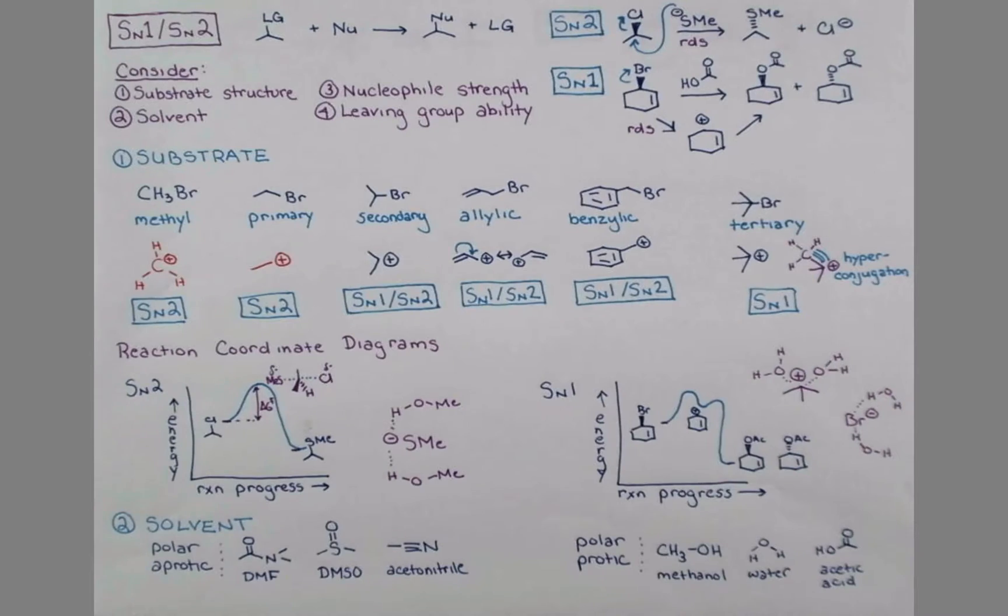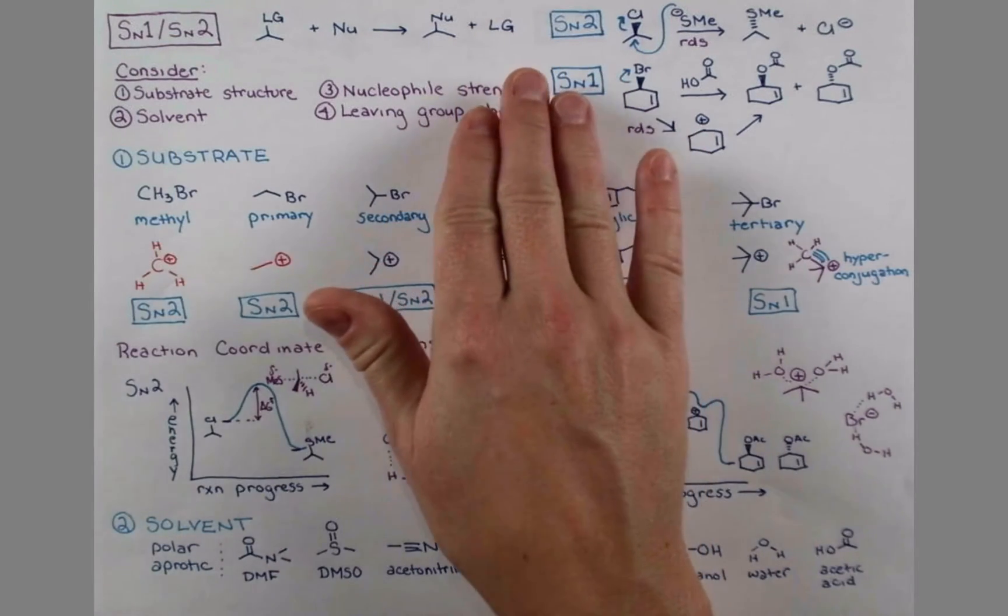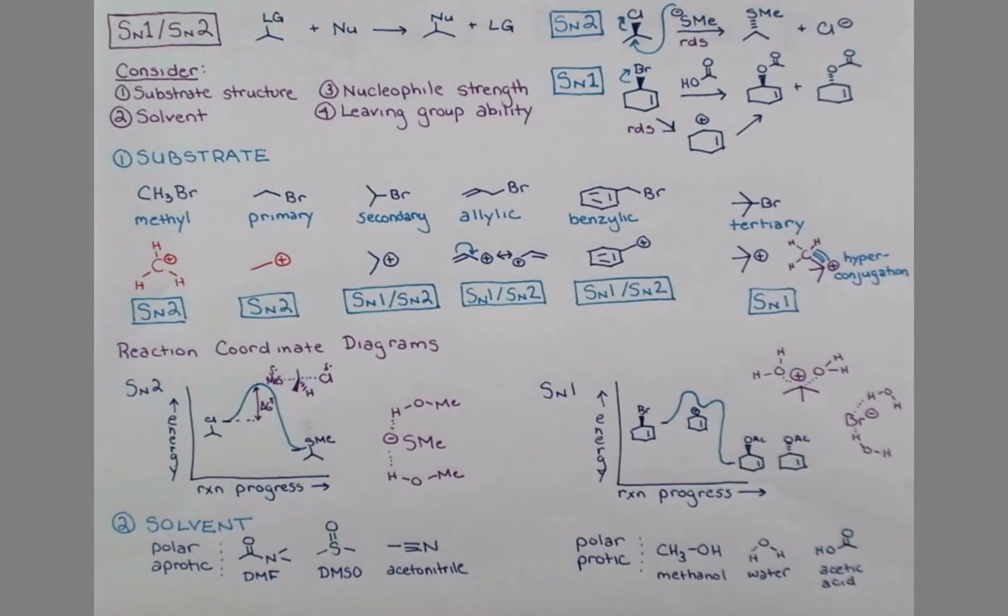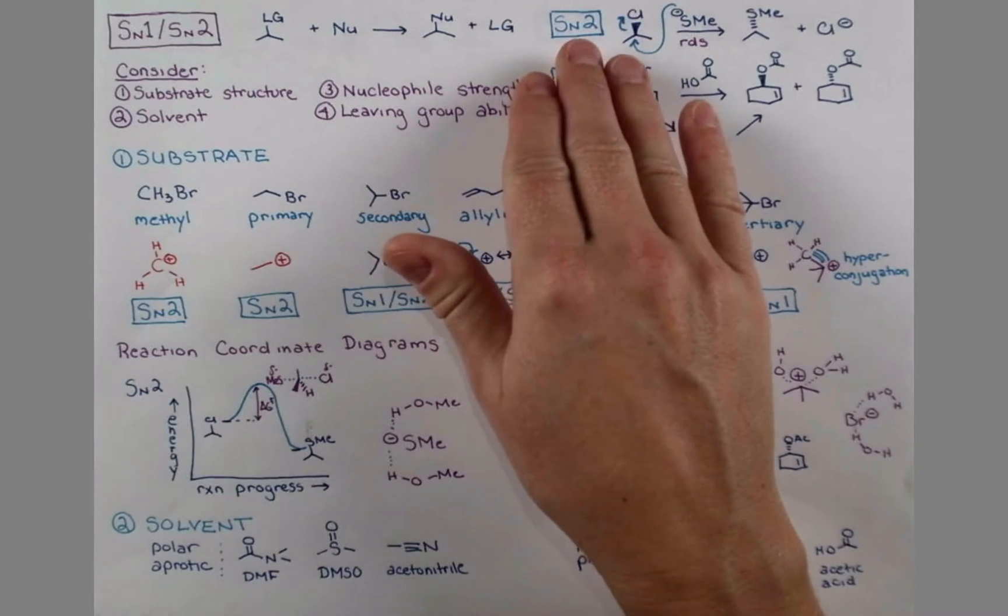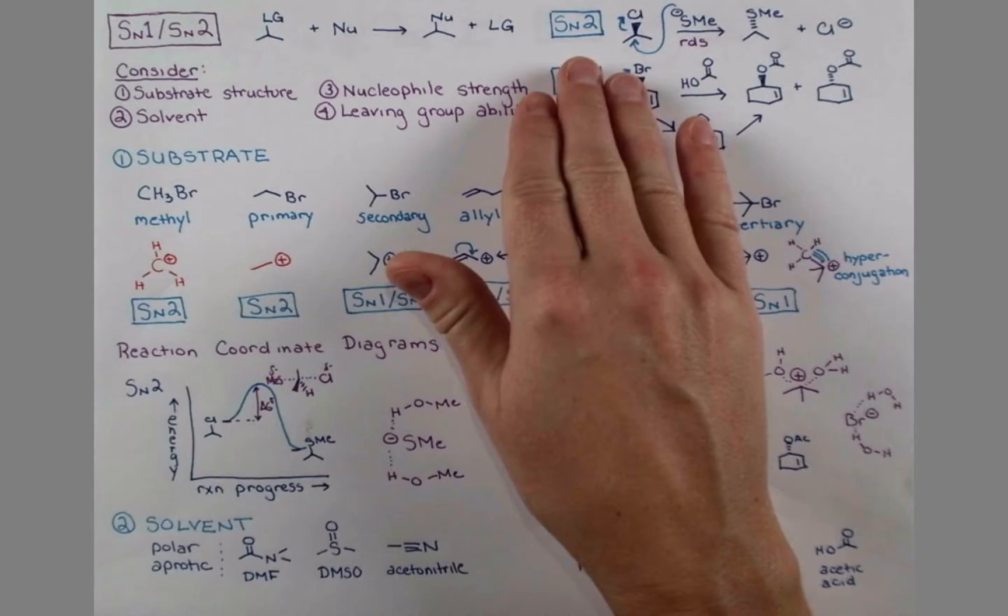When we last left off, we were looking at two competing mechanisms for substitution at sp3 carbon. These SN1 and SN2 reactions take place by different mechanisms.